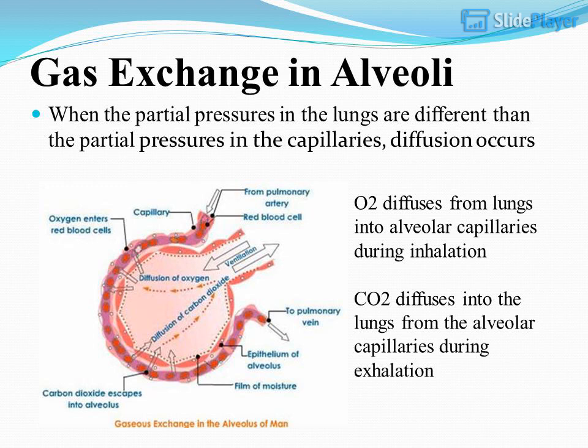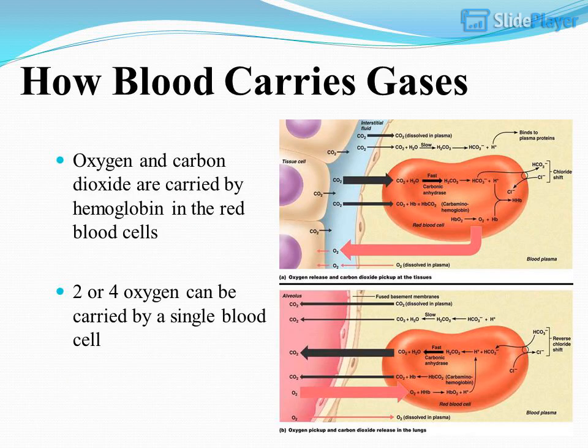Gas exchange in alveoli: when the partial pressures in the lungs are different than the partial pressures in the capillaries, diffusion occurs. O2 diffuses from the lungs into alveolar capillaries during inhalation. CO2 diffuses into the lungs from the alveolar capillaries during exhalation. Oxygen and carbon dioxide are carried by hemoglobin in the red blood cells; 2 or 4 oxygen molecules can be carried by a single blood cell.